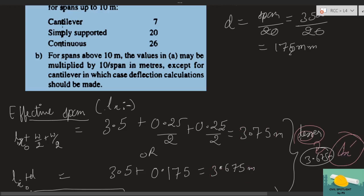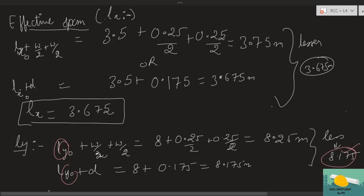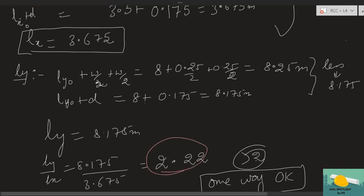So our design effective span lx = 3.675 m. Similarly, ly = 8 m + wall contributions = 8.175 m. Ratio ly/lx = 8.175 / 3.675 = 2.22, which is still greater than 2 — confirming it is a one-way slab even with effective spans.